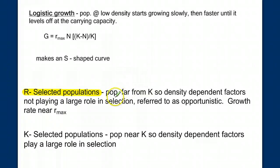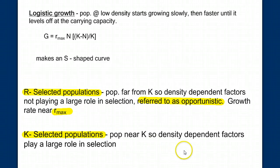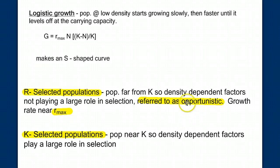In R-selected populations, where population size is far from K, density-dependent factors are not playing a very large role in selection. These populations are sometimes called opportunistic, and their growth rate is near the R-max. We contrast that with K-selected populations, whose size is near the carrying capacity, so that density-dependent factors play a very large role in selection — meaning how well an organism can cope in its environment. Individuals well-suited to compete in high-density situations are selected for, and those that can't are selected against. In R-selected populations, individuals very good at maximizing their rate of growth are selected for.